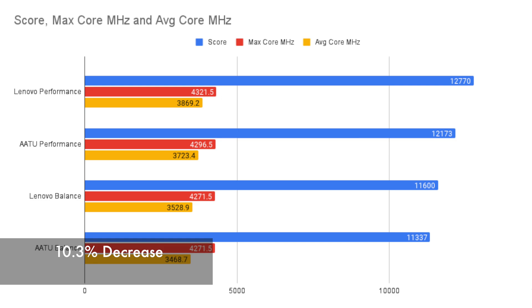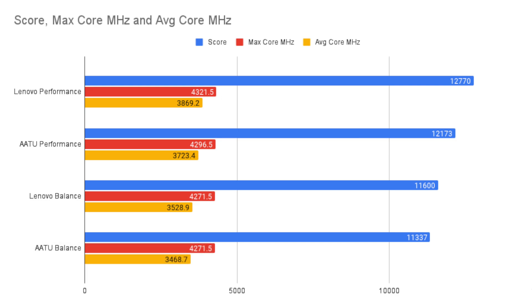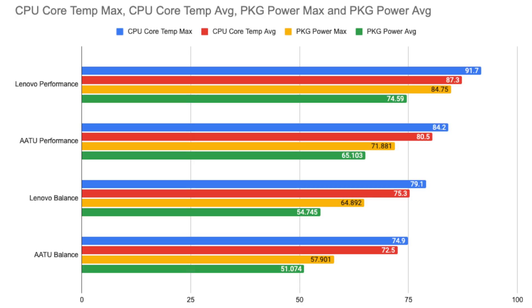Having a higher clock speed usually results in higher FPS in games. Higher temps will also accompany this increase in most cases. On this sheet, we have values for the CPU core and package power.